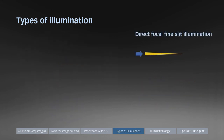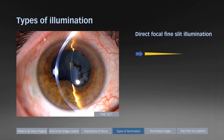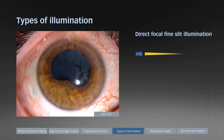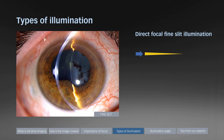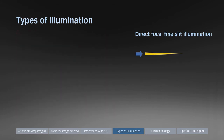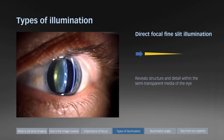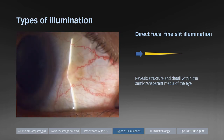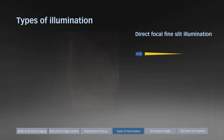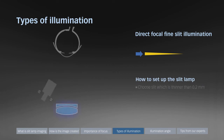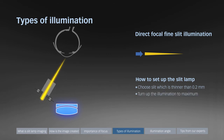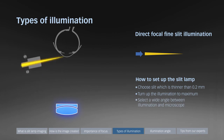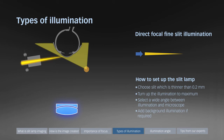Direct focal fine slit illumination delivers a narrow high intensity slit beam. Fine slit illumination can be used to reveal structure and detail within the semi-transparent media of the eye. It also assists with locating the level where pathological changes occur and allows visualization of topography. To set up the slit lamp, choose a slit thinner than 0.2 mm, turn up the slit illumination power to maximum, and select a wide angle between illumination and microscope. For optical sections, an angle of 90 degrees provides the best depth of focus.